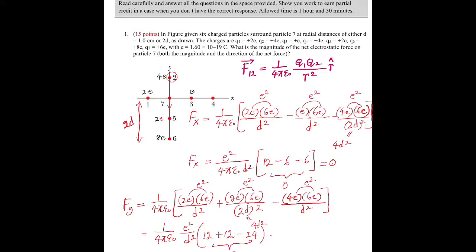Since both the x and y components of the resultant force are zero, the net force acting on particle 7 is zero newtons. Therefore, there is no direction for the force.